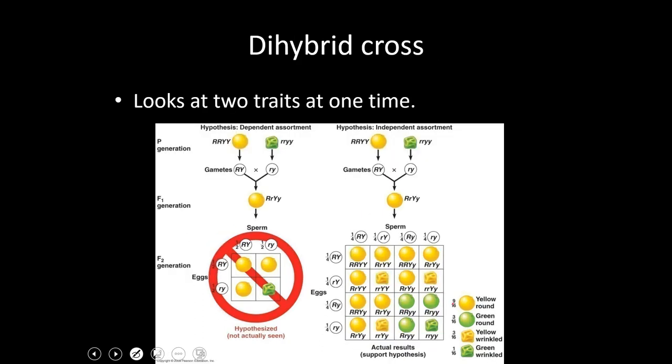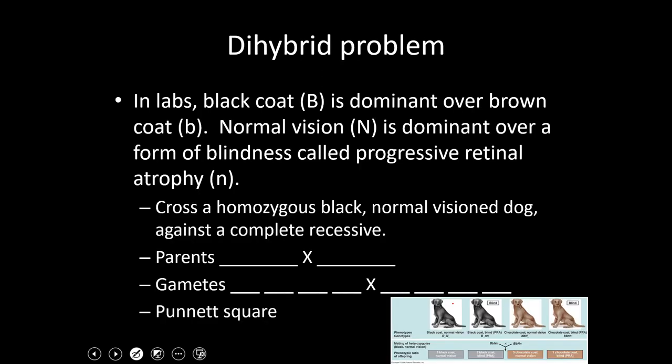When Mendel was doing his dihybrid crosses on pea plants — breeding round and yellow peas against wrinkled and green peas — he thought round and yellow would stay glued together and wrinkled and green would stay glued together, producing the same three to one ratio he'd seen in monohybrid crosses. Instead, something weird happened: organisms appeared that didn't look exactly like either parent. Those are called recombinants. As it turns out, round and yellow are not linked — they can be inherited independently. We're going to solve a dihybrid problem using Labrador retrievers: black coat is dominant to chocolate coat, big B is black and little b is brown. There's also a retinal atrophy gene where big N gives normal vision and two little n's cause blindness. We'll cross a homozygous black normal-vision dog against a complete recessive.